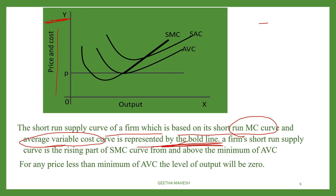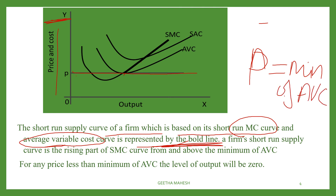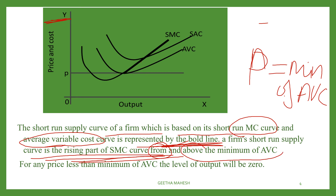In the short run, the supply curve of a firm is based on the marginal cost curve and average variable cost. It is represented by the bold line — the rising part of the SMC curve. The price is equal to minimum of AVC at this point. The rising part of the SMC curve from and above the minimum of AVC is called the supply curve of a firm.